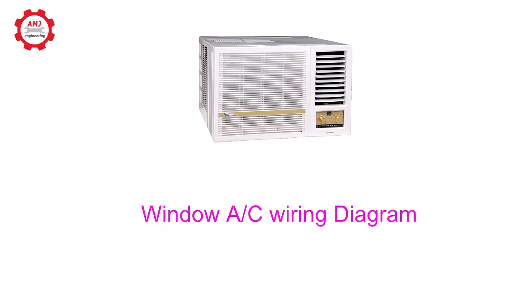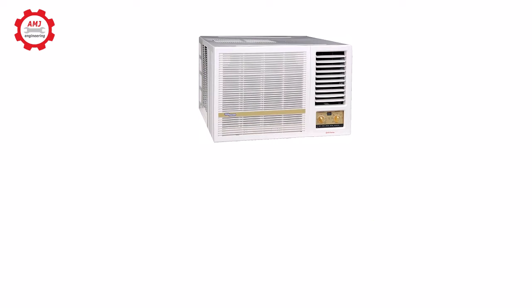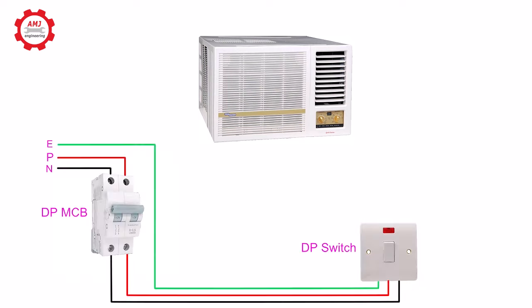Now let's see the wiring diagram of a window AC. In the case of a window air conditioner, the wiring is very simple. The power cable contains three wires — phase, neutral, and earth — which go to the window AC from the double pole switch.